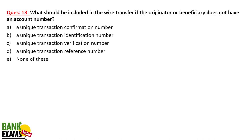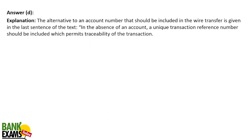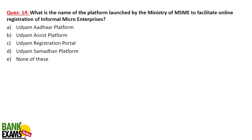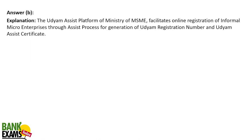What should be included in a wire transfer if the originator or beneficiary does not have an account number? A unique transaction reference number is required in the absence of an account number. What is the name of the platform launched by the Ministry of MSME to facilitate online registration of informal micro enterprises? It is the UDYAM Assist platform, launched so that micro enterprises can get the UDYAM certificate easily.